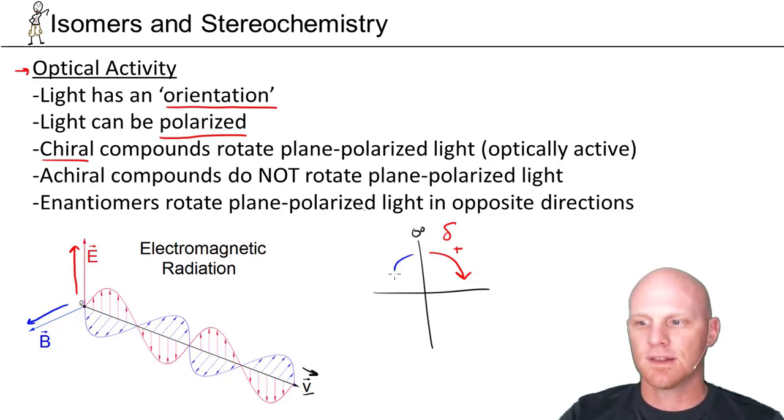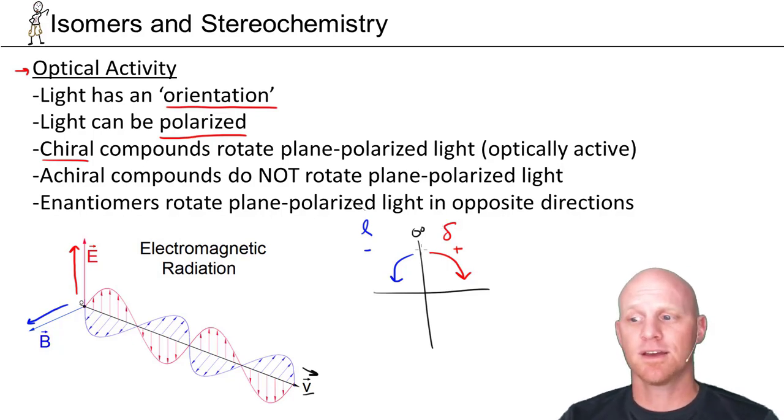But if it rotates light to the left, we might call that L or minus. The D and L here correspond to dextrorotatory and levorotatory, which simply just mean right rotating and left rotating. Or plus and minus are commonly used as well.